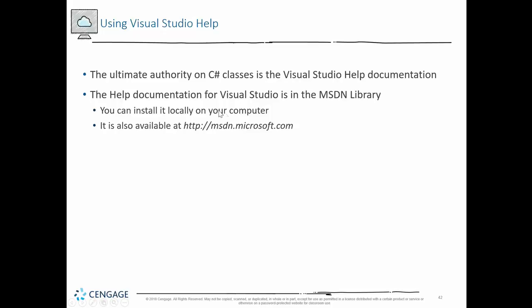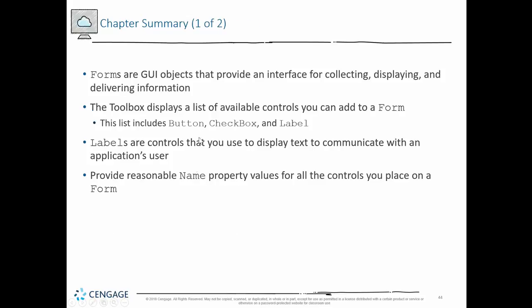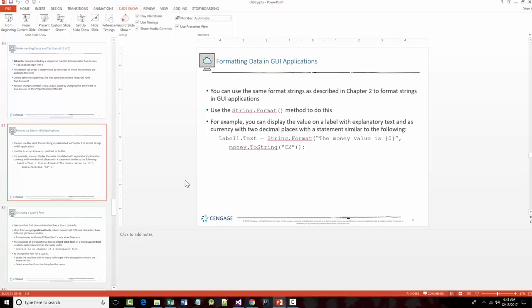The ultimate authority on C# is the C# library. If you go out to msdn.microsoft.com — MSDN stands for Microsoft Developer Network — that'll answer most questions you might have. The last thing in this chapter is how to decide whether to use a console application or a GUI application. GUIs are snazzier but take longer to develop; consoles are simpler and may be better when you're first starting out.